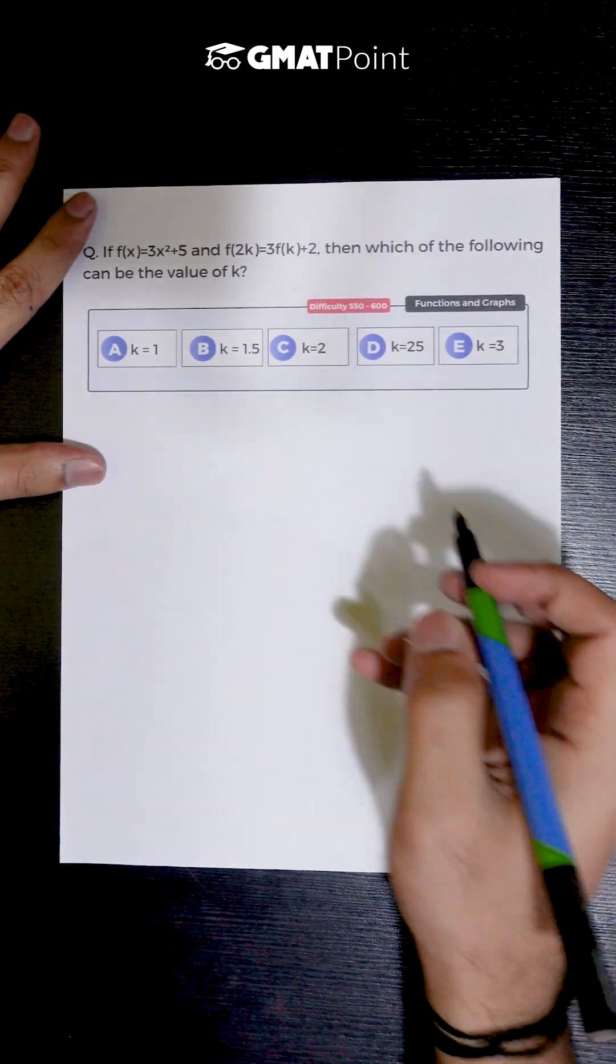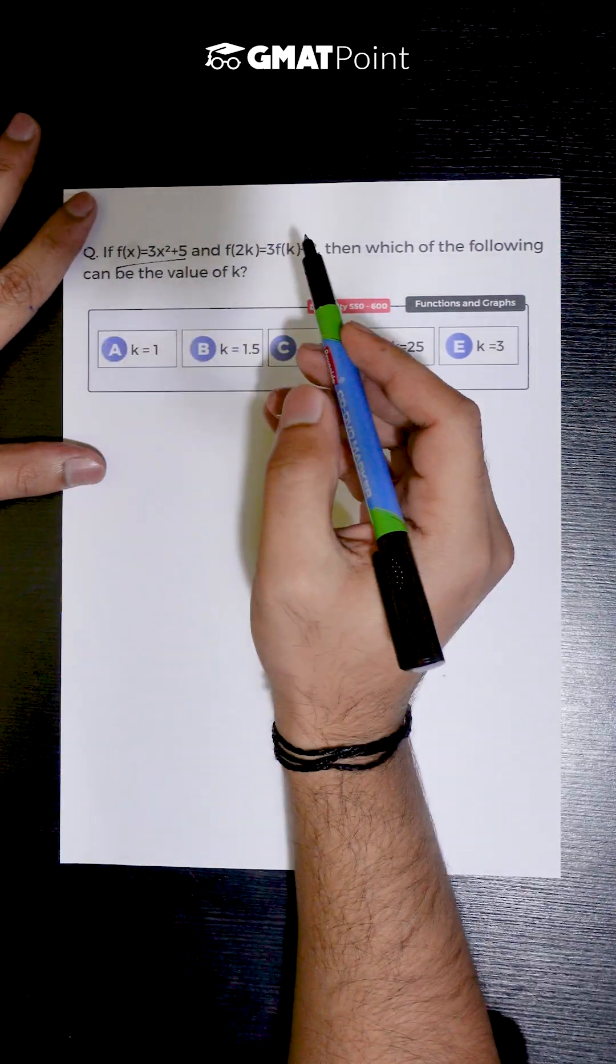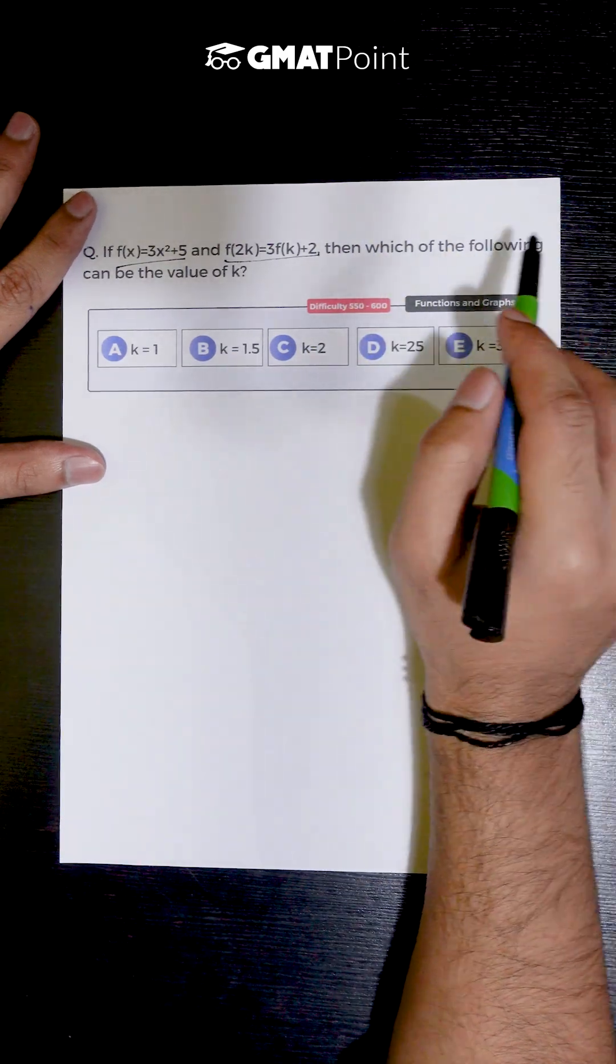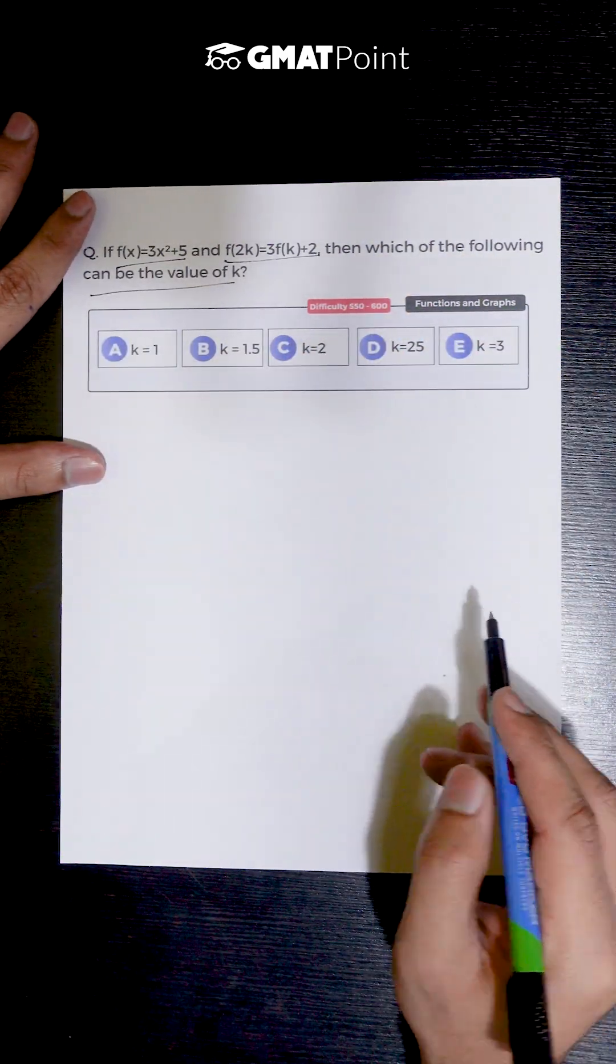Let us see how to solve this question. If f(x) = 3x² + 5 and f(2k) = 3f(k) + 2, then which of the following can be the value of k?